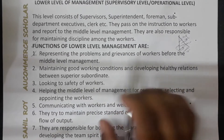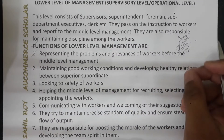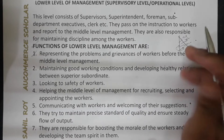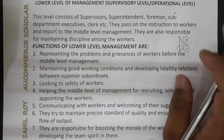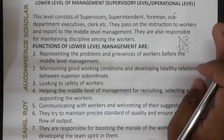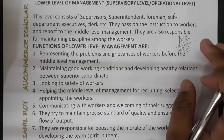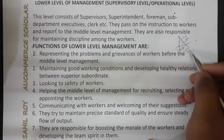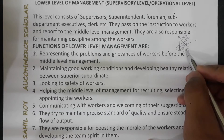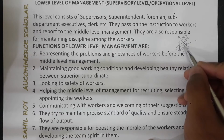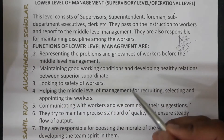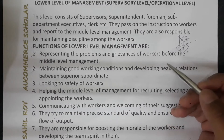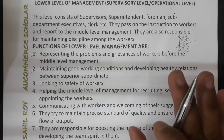The first function is representing the problems and grievances of workers before the middle level management. If workers have any problem, any grievance, or any complaint, the supervisory level managers are directly linked with subordinates and are the right persons to understand these problems. They then pass these problems to middle level management.